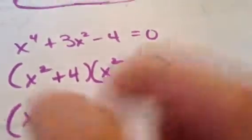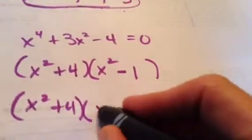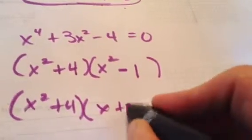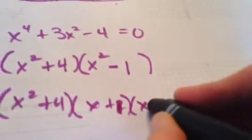Everybody see? There's no way this one will ever equal zero, no matter what you put. But this one I can factor as x plus two—excuse me—x plus one, x minus one.